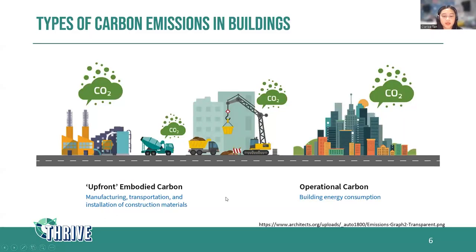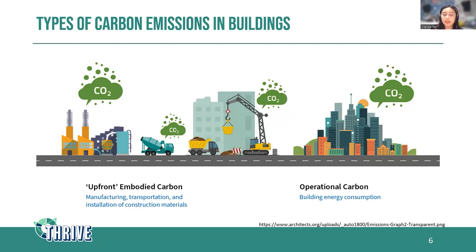An important aspect when talking about sustainability is carbon emissions. In the context of building, there are two types. First is the upfront or embodied carbon — these are the carbon emissions associated with creating the building itself, including manufacturing, transportation, and installation of construction materials. The second type is operational carbon, which refers to the carbon emissions associated with the actual use of the building — the daily activities of the people living in it and their energy requirements.